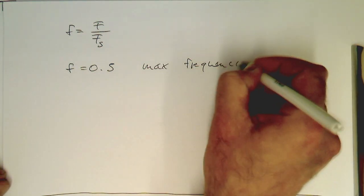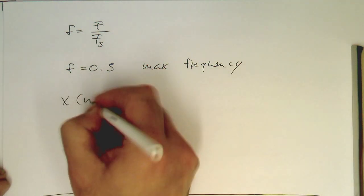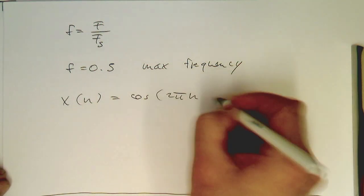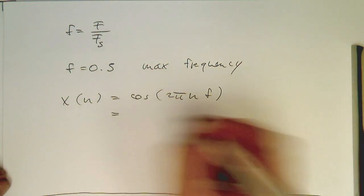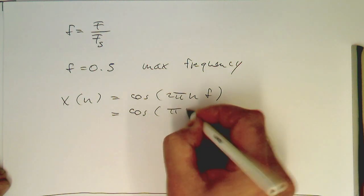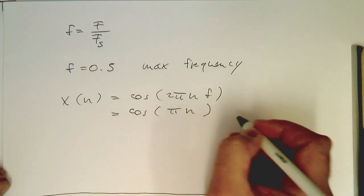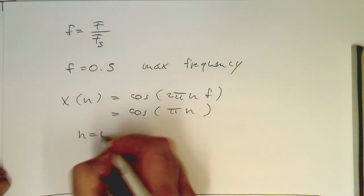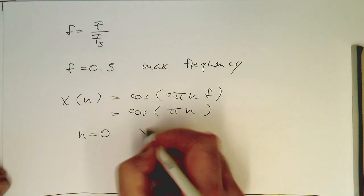So let's see. So let's put this in our cosine function here. x of n is cosine of 2 pi n f. So this gives us here cosine pi n. So how does it look like for n equals 0?